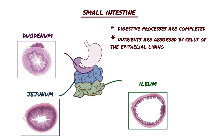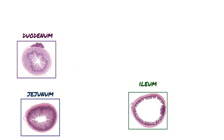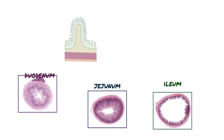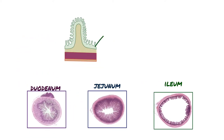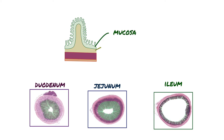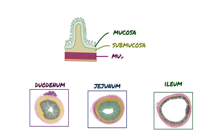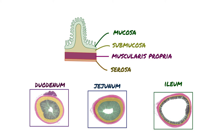Similar to the rest of the gastrointestinal tract, the wall of the small intestine has four main layers: the mucosa, submucosa, muscularis propria, and in the small intestine the outermost layer is a layer of connective tissue called the serosa.